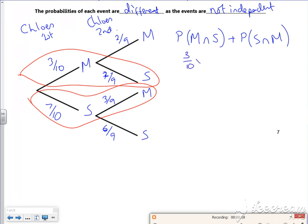3 over 10 times 7 over 9, 7 over 10, 3 over 9, that's going to give me, according to this, 7 over 15, there.